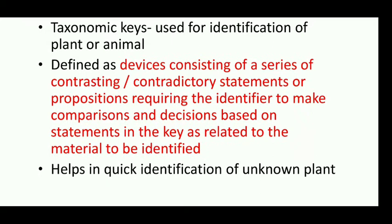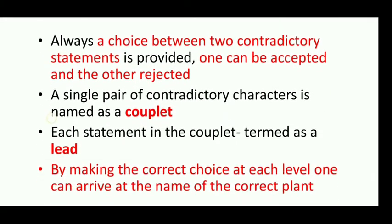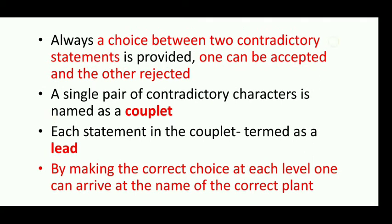It helps in quick identification of unknown plant species, and always a choice between two contradictory statements is provided. One can be accepted and the other is rejected. Out of two statements, one statement must be accepted as the correct matching, and one statement must be rejected as not matching with the plant.